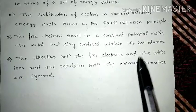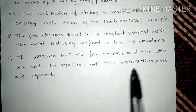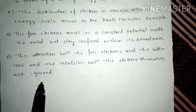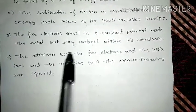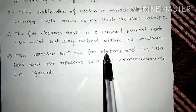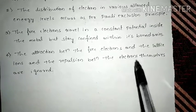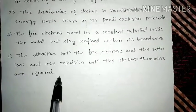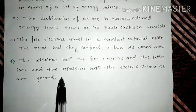And the last one is, the attraction between the free electrons and the lattice ions, and the repulsion between the electrons themselves are ignored. So the lattice ions are positively charged ions and electrons are negatively charged particles. And that is the reason, the attraction between the electron and the lattice, and the repulsion between the electrons, is always ignored. We will not consider those attraction or repulsive forces.